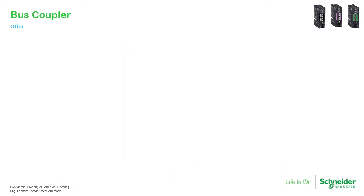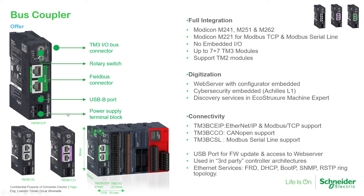Each bus coupler has some rotary switches that allow us to configure the address, baud rate, or bit rate, depending on the device we are working with. We also have the possibility of making a daisy chain with the two ports on the front, plus a mini-USB and a power supply terminal block for 24 volts DC.